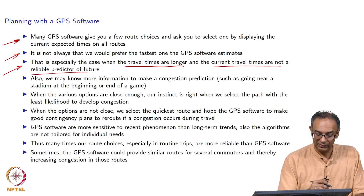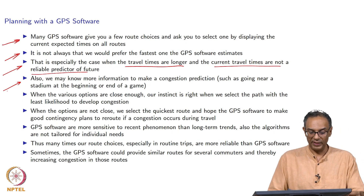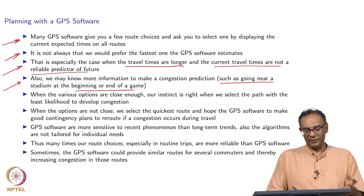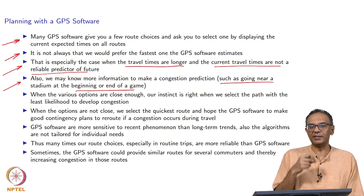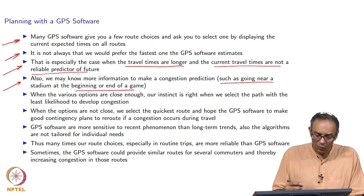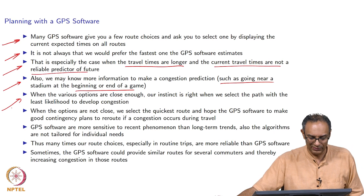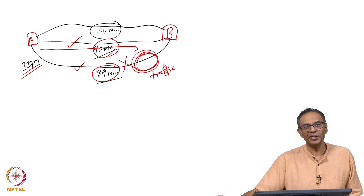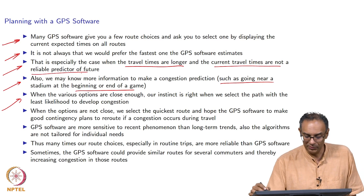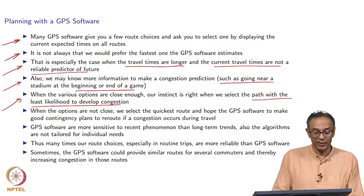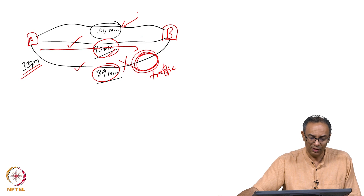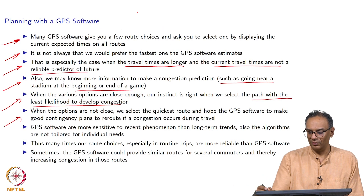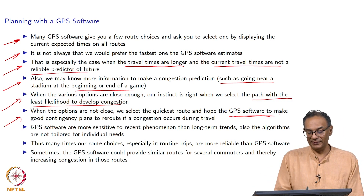When options are very close, you are better off using your intuition. Your intuition is generally right when you pick a path less likely to develop congestion. When the options are not close — like you would probably ditch the 104-minute route — then you just pick the quickest one and let the GPS software re-route if there is congestion along the way.